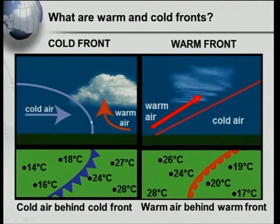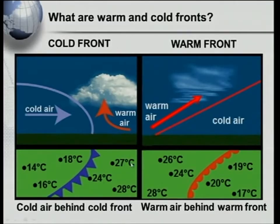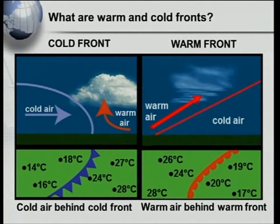Here's the cold front. Behind the cold front we've got cold air. Can you see that cold air is moving towards the warm air? And this is the symbol of your cold front. Let's have a look at the temperatures. In front of the cold front: 27, 24, 28 degrees Celsius. Just look behind the cold front: 18, 14, 16 degrees Celsius. In other words, take note that you always have your cold air behind the cold front.